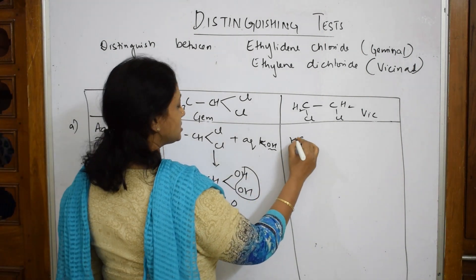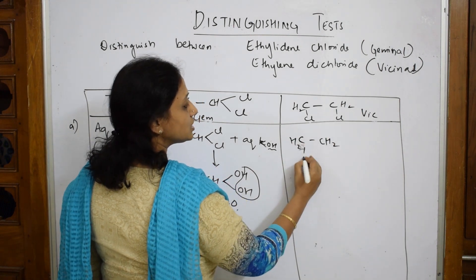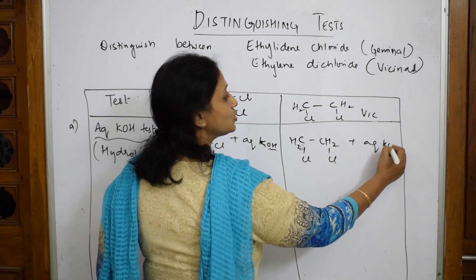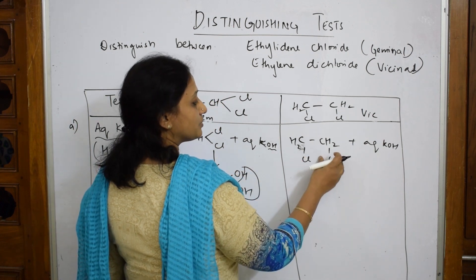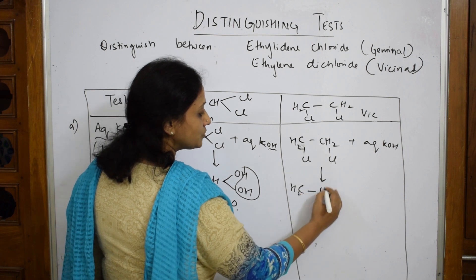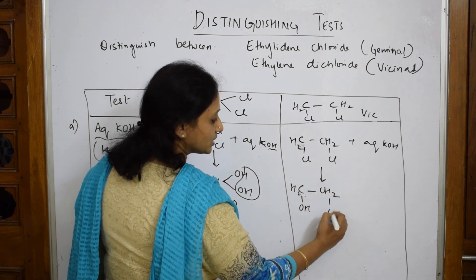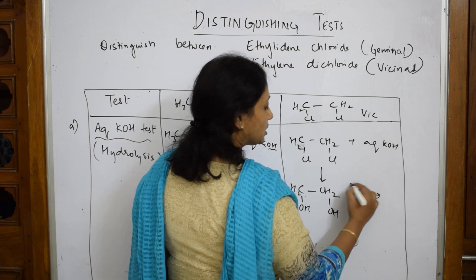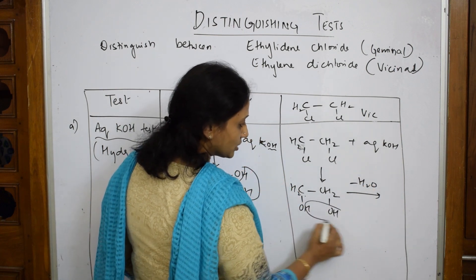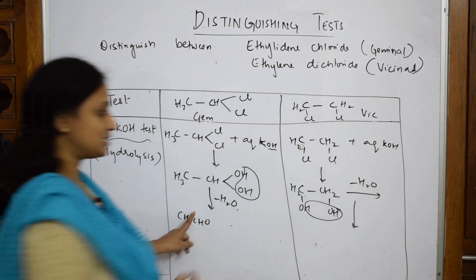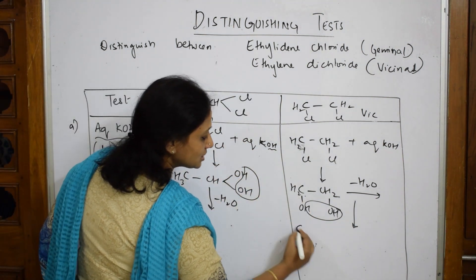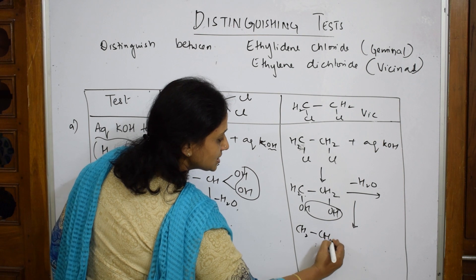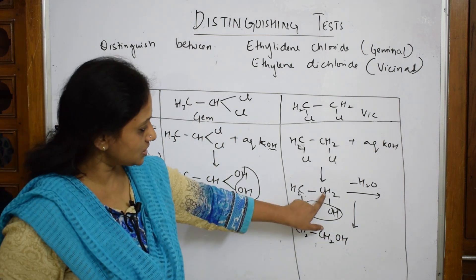Now for the vicinal halide: CH₂Cl–CH₂Cl. I add the same aqueous KOH — two moles. One chlorine from each carbon is replaced. So I get CH₂OH–CH₂OH. Both the chlorines are replaced by OH. Then I take out the water molecule. What I get is CH₂OH–CH₂OH, which is an alcohol — a diol.